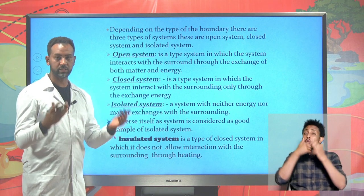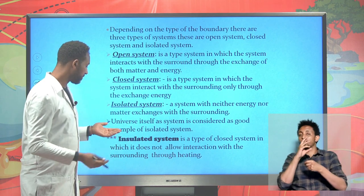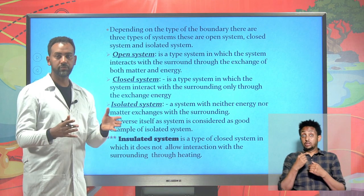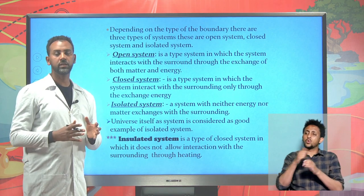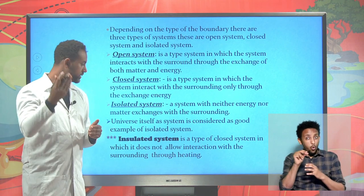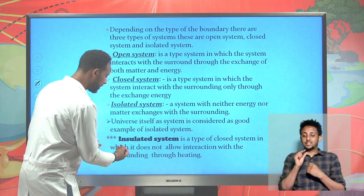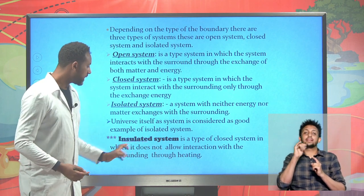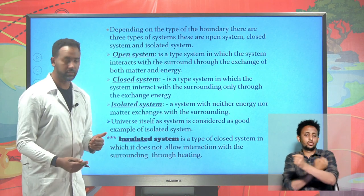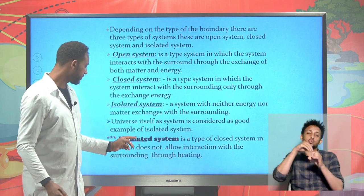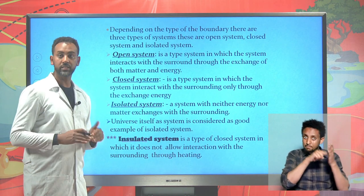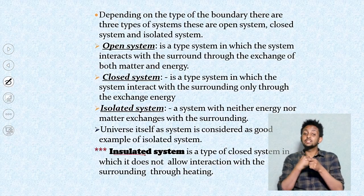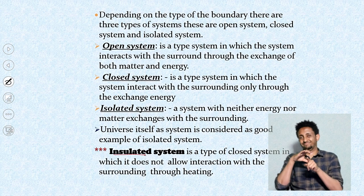An isolated system is totally isolated from the surrounding - no energy in or out. One good example of an isolated system is the universe itself, which contains its own energy and matter. We also have a similar term called an insulator system - a system which does not allow energy exchange in the form of heat. Don't confuse this with isolated system. An isolated system allows neither energy nor matter exchange, whereas an insulator system allows energy exchange in other forms, but not heat.